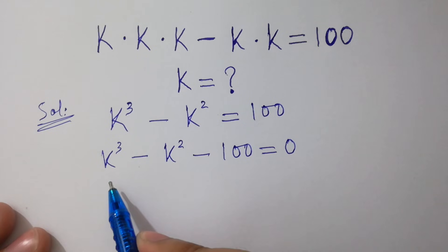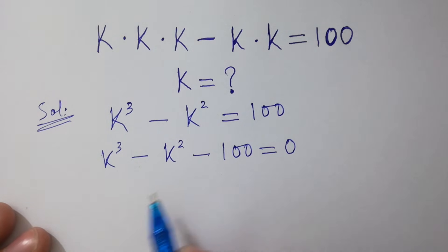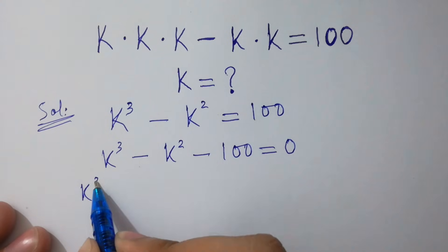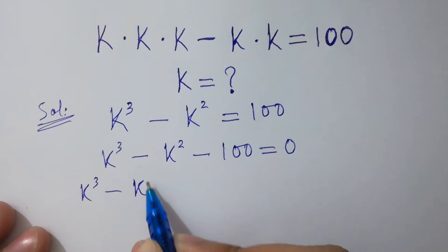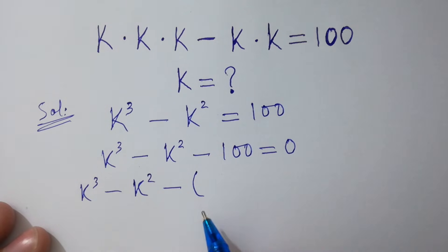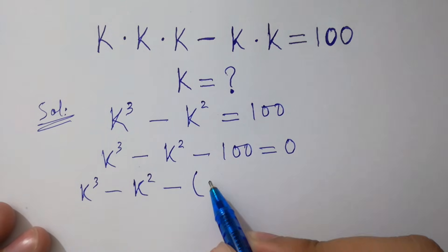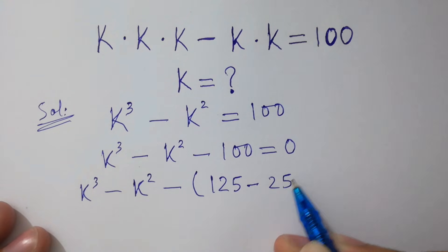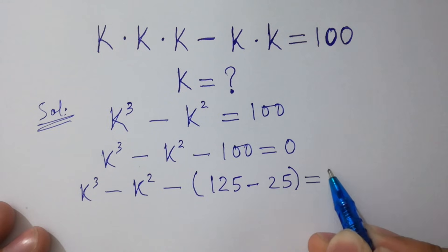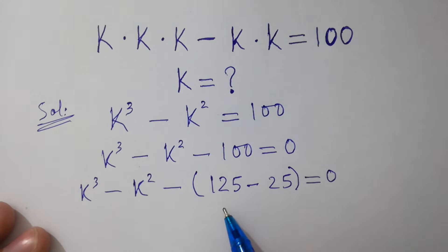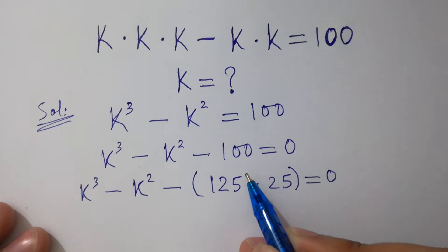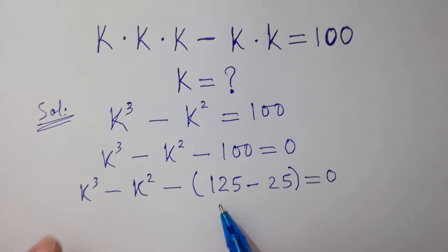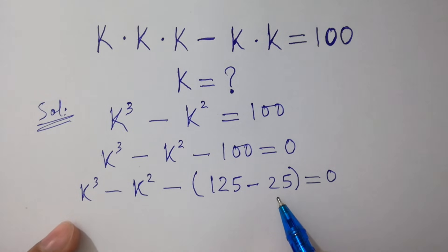To solve this, we need a cube and a square. Notice that 100 is the same as 125 minus 25, because 125 minus 25 equals 100. And 125 is 5 cubed and 25 is 5 squared. I hope you understood.